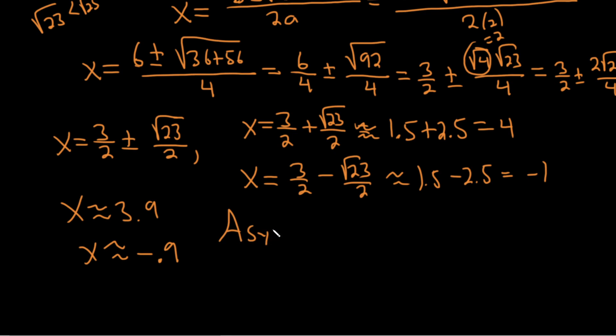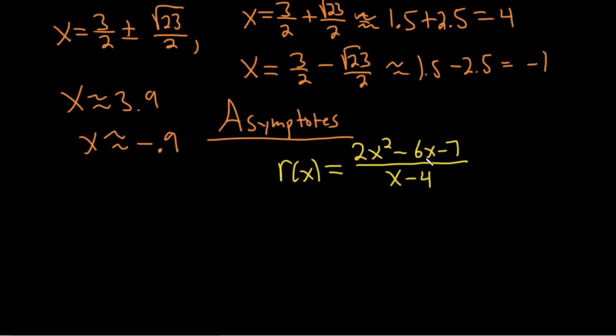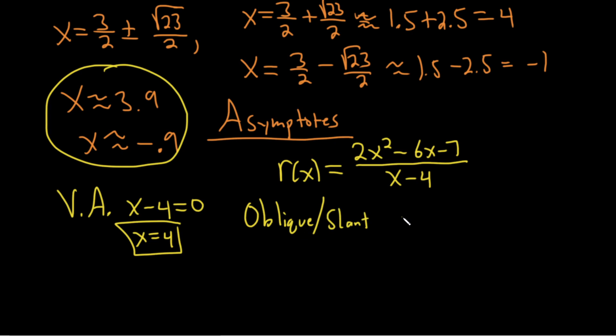Okay, so for the asymptotes, I'm going to write the original function down again so we can see it. I feel like we spent a lot of time on the x-intercepts. r(x) = (2x² - 6x - 7)/(x - 4). I purposely picked one that looked a little bit harder. This is from some random book. I haven't done this yet. The VAs. To find the VAs, you simplify first if possible. There's no simplification possible here. Then you set the bottom equal to 0. VA stands for vertical asymptote. So we get x - 4 = 0, so x = 4. So that's going to be a vertical line. Whenever the degree in the numerator is exactly one higher than the degree in the denominator, you have what's called an oblique or a slant asymptote.